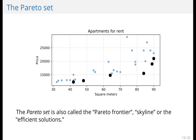If you Google this, you should know that there are a lot of synonyms for this concept. It's also called the Pareto front or Pareto frontier. It's called the skyline in the database context — skyline query or skyline operator. And in the context of multi-objective optimization, it's called efficient solutions.